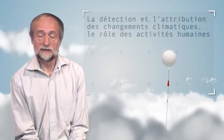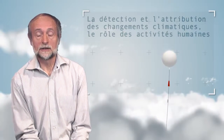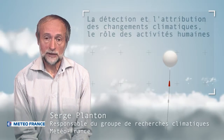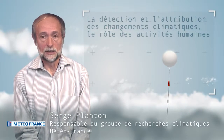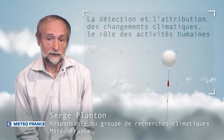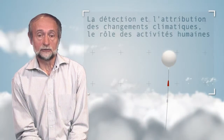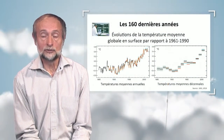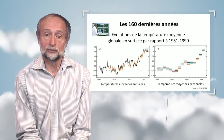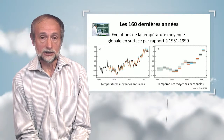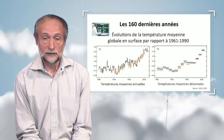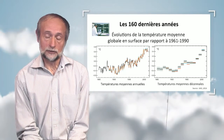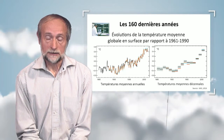I'm going to tell you about detection and attribution of climatic changes, focusing on human activity and the impact on recent climatic evolutions. Recent climatic evolutions are shown here. On the left-hand side graph, we see the evolution of average yearly temperatures — global temperatures in the period between 1850 and today.